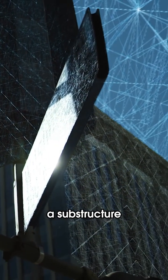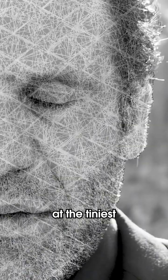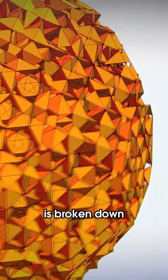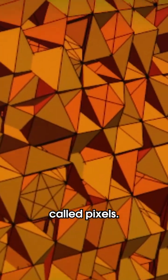Klee envisions a substructure of space and time at the tiniest possible scale. You know how your TV screen is broken down into fundamental units called pixels?